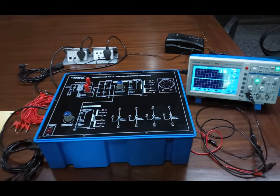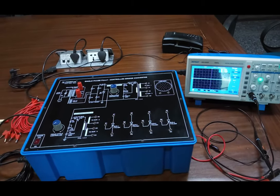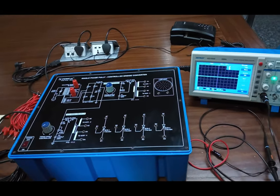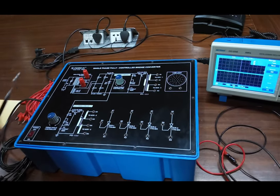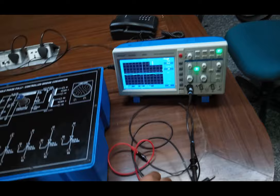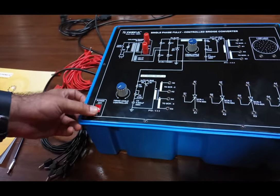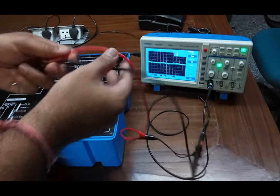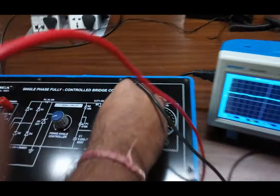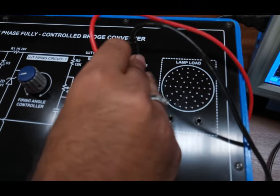Now, we move on to the practical. We first observe the gate pulse waveform on the CRO from these firing circuits. For this, we first power on this circuit. Now, connect the CRO probe to G1 and GND to K1.